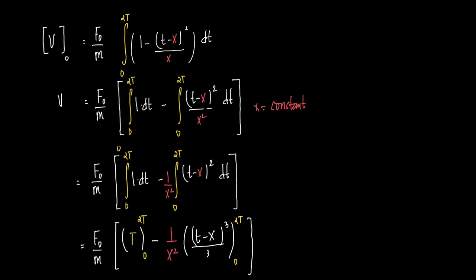So the integral becomes: (F₀/m) × ∫ from 0 to 2x of (1 - (t - x)²/x²) dt. I'll split this into two integrals: first, ∫ from 0 to 2x of 1 dt, and second, ∫ from 0 to 2x of (t - x)²/x² dt. Since x is a constant, x² can be taken outside the second integral.